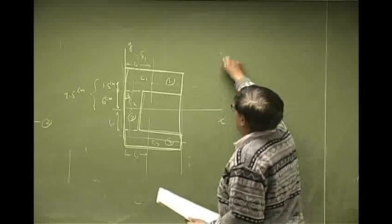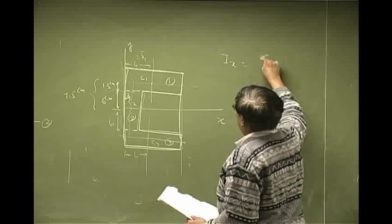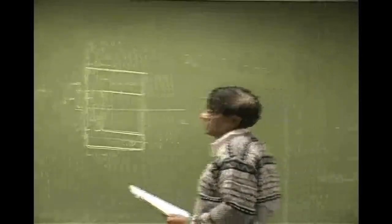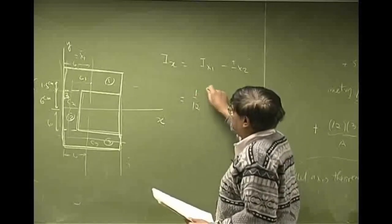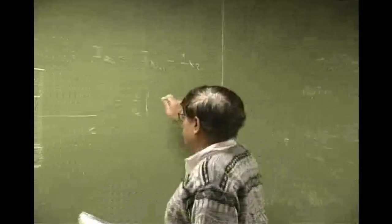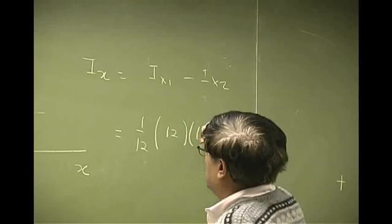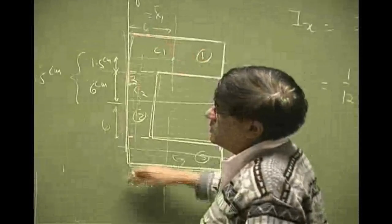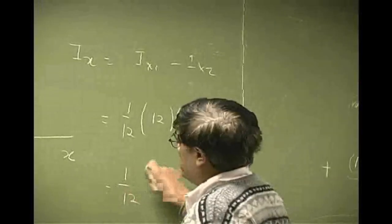If I do that, then Ix would be Ix1 minus Ix2. There will be 1/12, you have 12(18)³. 12 here, and this one which is 18, minus 1/12.